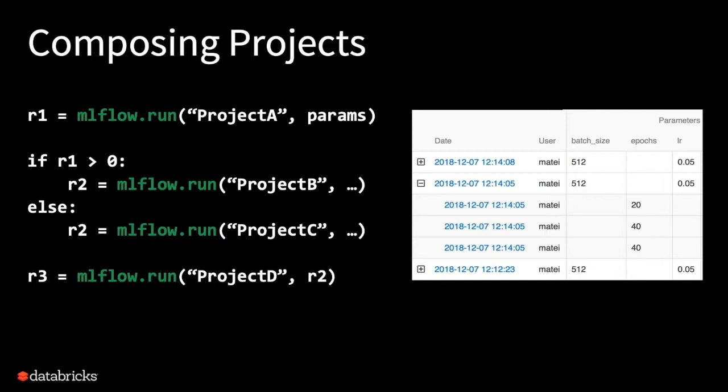You can also call projects programmatically and hook them into multi-step workflows. You can write a driver script that calls different projects, with branching and algorithms like hyperparameter search. MLflow will keep track of who called who and show you a tree of runs. It's also possible to cache the results of steps so you don't redo them — you can memoize a step. If your repo follows a certain structure, you don't even need the MLproject file. There's also an incentive as an individual user: you get memoization and modularity out of the box.